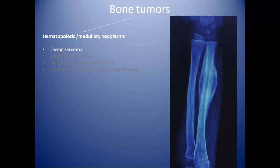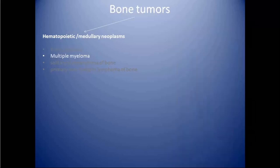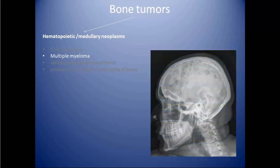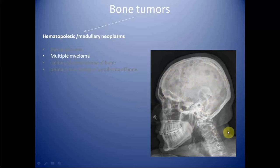Ewing sarcoma patients generally present with pain, swelling, and fever with raised ESR. Differential diagnosis includes osteosarcoma, leukemia, eosinophilic granuloma, and osteomyelitis. Ewing sarcoma is the only tumor which mimics infection. Next is multiple myeloma, which is the most common primary bone tumor in elderly patients. It is seen as sharply demarcated lytic areas in the axial skeleton, or they can represent soft tissue masses. In the skull, multiple osteolytic areas of varying sizes are seen — this radiographic picture is known as raindrop skull. Multiple myeloma is characterized by proliferation of plasma cells with systemic involvement, and patients can have bone pain, proteinuria with amyloidosis, and renal failure.